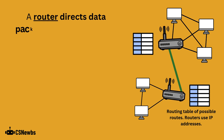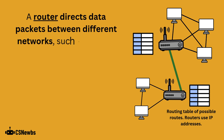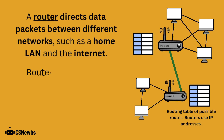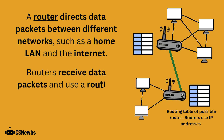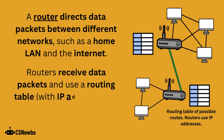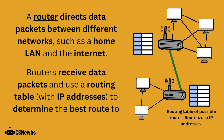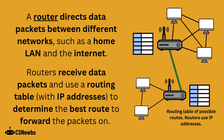A router directs data packets between different networks, such as a home local area network and the internet. Routers receive data packets and use a routing table containing IP addresses to determine the best route to forward the packets on.